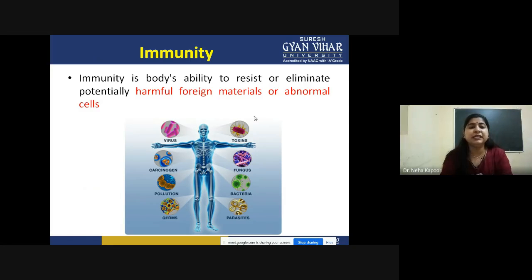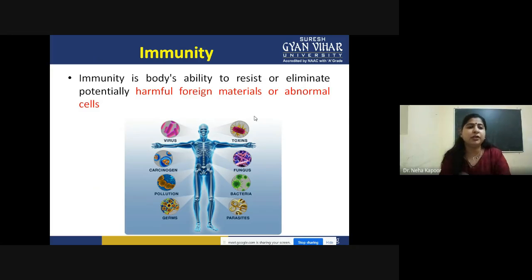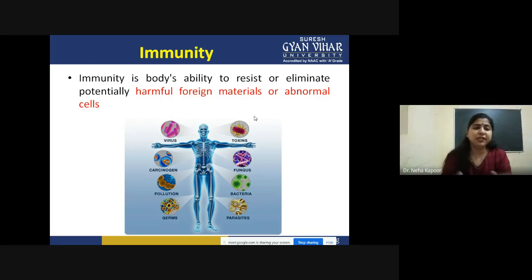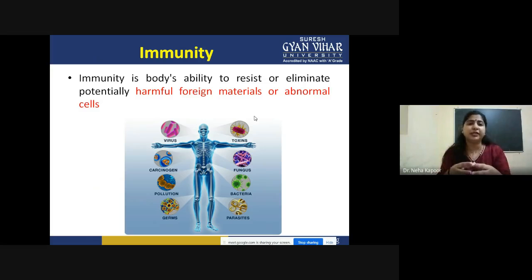What is immunity? Immunity is the capability of a host body to resist or eliminate potentially harmful foreign materials or abnormal cells. These foreign materials or abnormal cells can be anything — viruses, carcinogens, pollutants, toxins, bacteria, parasites, or even tumor and cancerous cells. When our body tries to protect itself against all of these things, that is known as immunity.